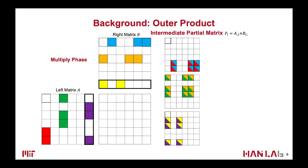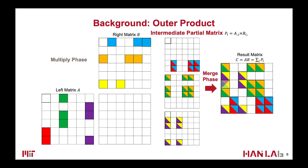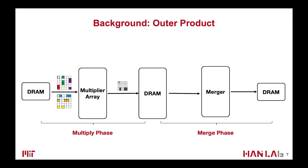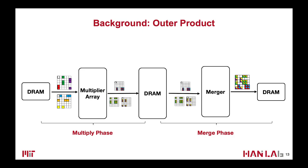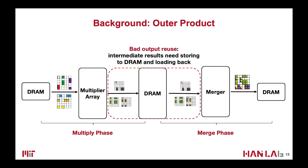We repeat that to get three partial matrices. In the second merge phase, these partial matrices will be combined by element-wise addition to be merged into one final matrix. This method has perfect input matrix reuse because each column and row only needs to be fetched once. But for partial matrices, we need to store them to DRAM and then load them back later to do the merge, which incurs a large number of DRAM accesses. Therefore, the output reuse of the outer-product-based method is not that good.